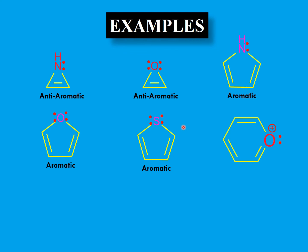A six-membered ring with an oxygen bearing a positive charge (forming three bonds) is also aromatic. This oxygen is sp2 hybridized, so its lone pair is in an orbital perpendicular to the pi system and not involved in conjugation. The pi system inside the ring has six electrons in conjugation — a Hückel number — and the ion is planar, making it aromatic.